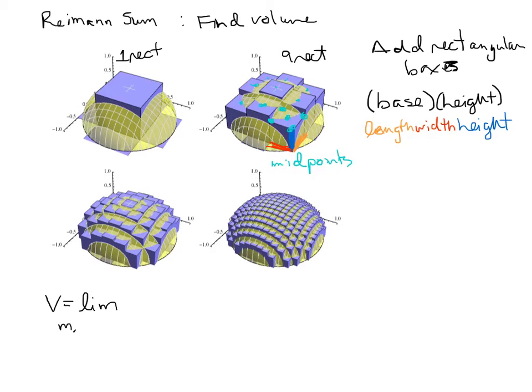I'm going to write out an equation here, and then I'll explain it. We're going to take a limit as M and N go to infinity, we are going to be adding from i equals 1 to M, and then also from j equals 1 to N,